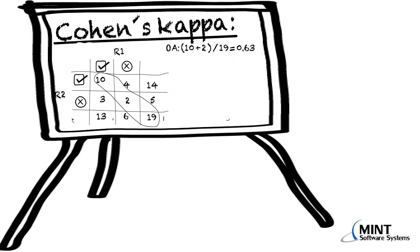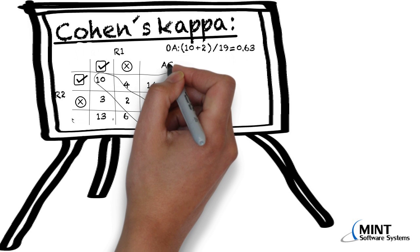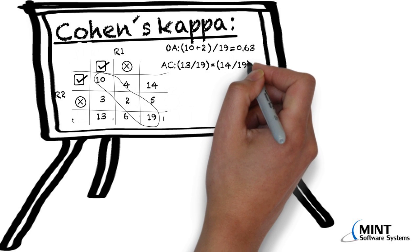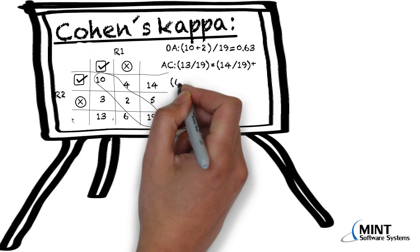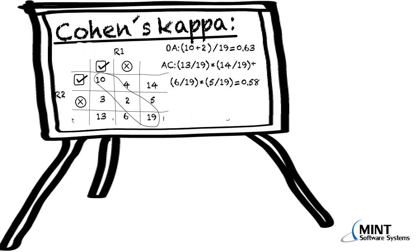However, there is a problem with this, because there is always the probability of random agreement, and Cohen's Kappa wants to take the agreement by chance out of the equation. So we have to compute the agreement by chance first and subtract that. The agreement by chance that both agree positive is (13/19) × (14/19), because in 13 cases rater one said yes and in 14 cases rater two said yes. Plus the agreement by chance for negative, which is (6/19) × (5/19). So the agreement by chance is already 0.58, which is impressive — meaning that in more than 50% of cases the agreement just happened by chance.